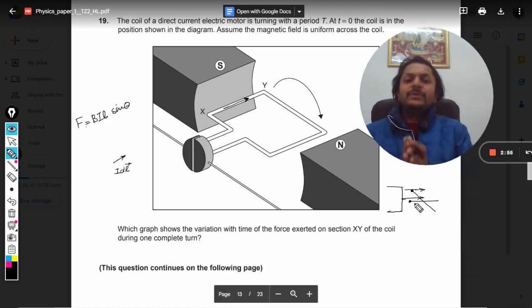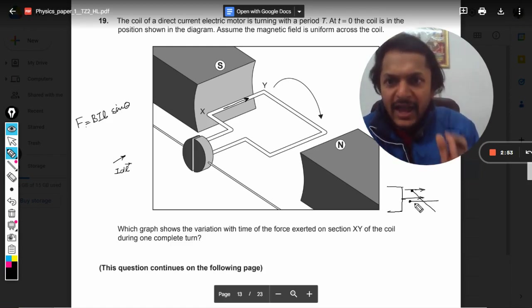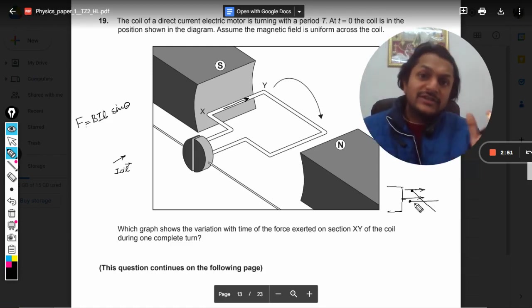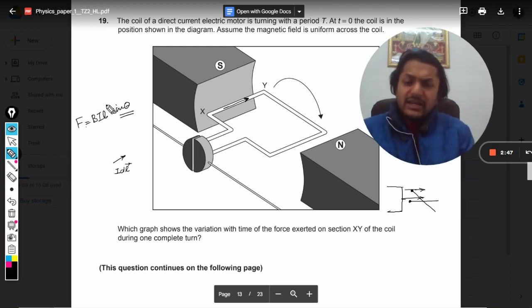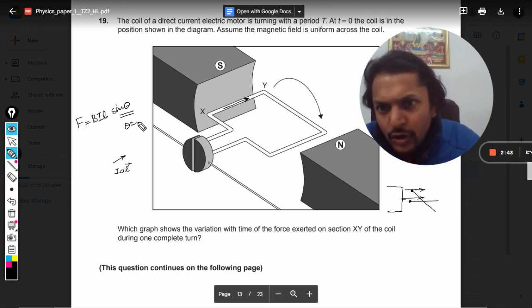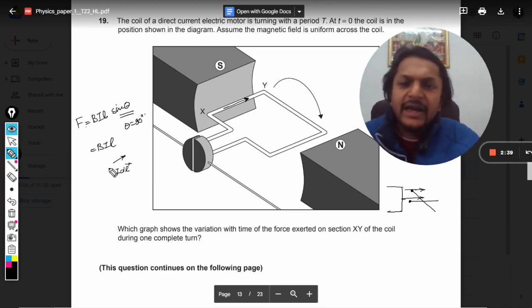So this will be 90 degrees. It is variable sometimes, but in this question it is not. So θ is always equal to 90 degrees. So your force becomes BIL. And now we want to see the direction of the force.